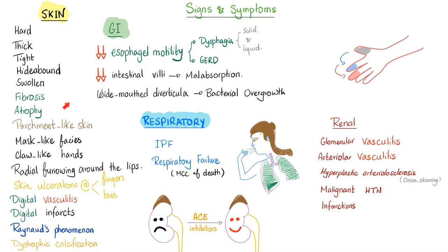Signs and symptoms of scleroderma in a nutshell: the skin is hard, thick, tight, hidebound, swollen, fibrotic, atrophic, parchment-like. Patients develop a mask-like face, claw-like hands, and radial furrowing around the lips. The mouth gets narrower — sometimes called fish mouth, which is reminiscent of mitral stenosis. Skin ulceration, digital vasculitis, and digital infarct are all prominent features.